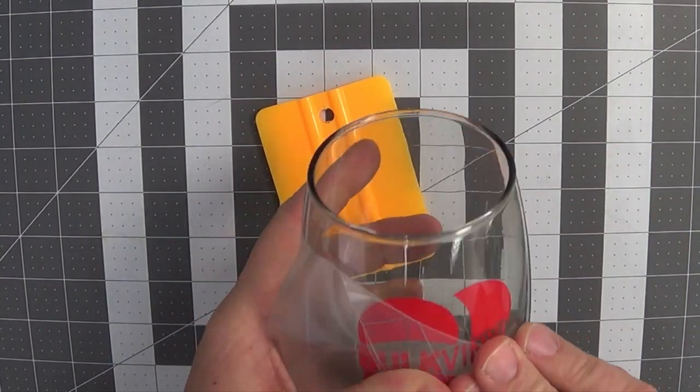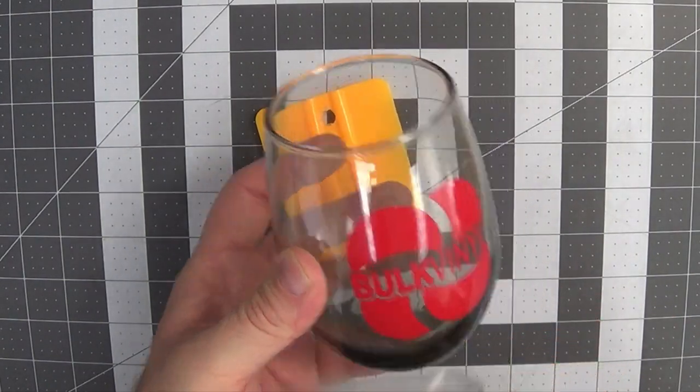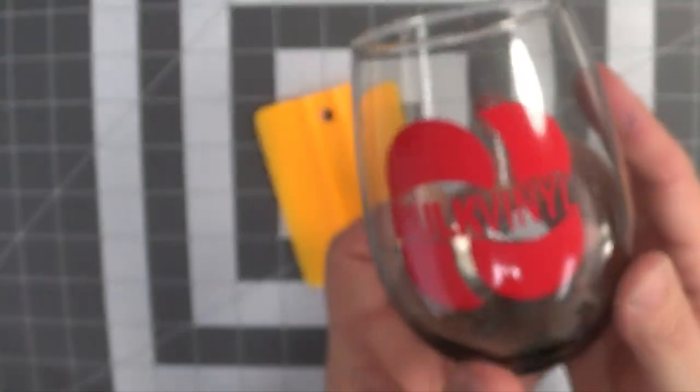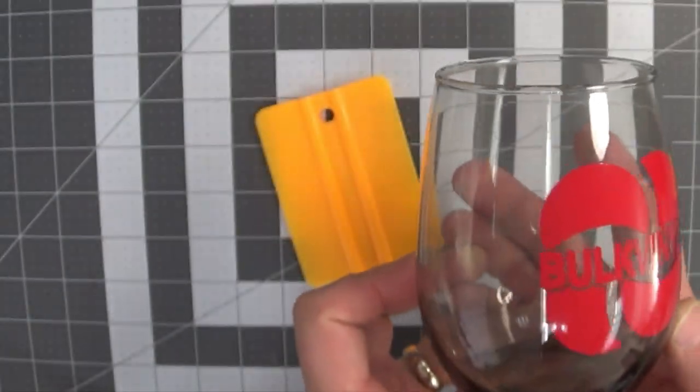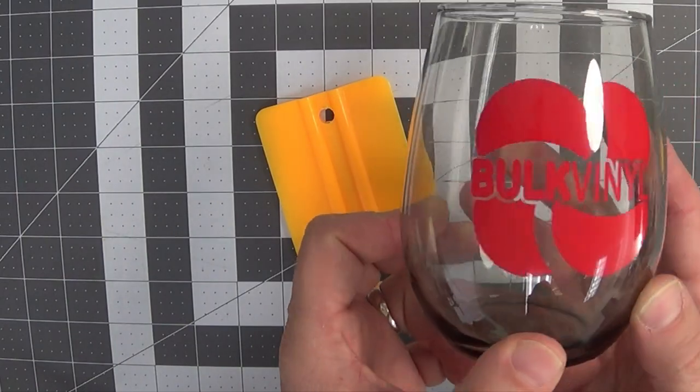And again we remove our transfer tape by rolling it back against itself, and there you see a decal applied to a wine glass with zero bubbles underneath of it.